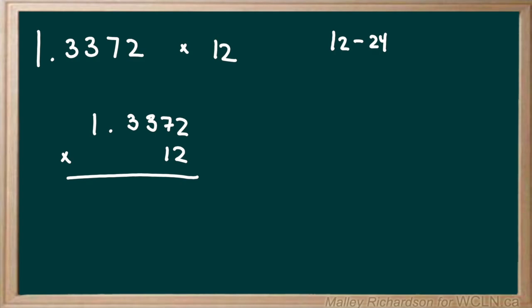So we start with 2 times 2 which is 4. 2 times 7 which is 14. So we bring the 4 down and carry the 1. 2 times 3 is 6, 6 plus 1 is 7. 2 times 3 is 6. And then finally 2 times 1 gives us 2. Now we are done with this 2.